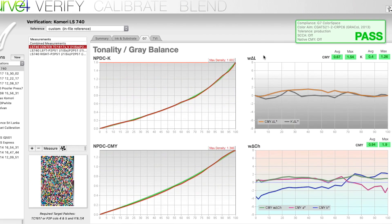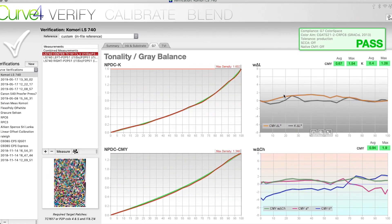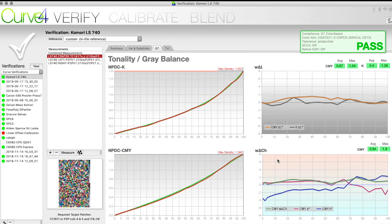You can see here it also has an average and a max. So weighted delta L is looking at how light or dark those ramps are, and then weighted delta CH is looking at whether it's neutral or not neutral.